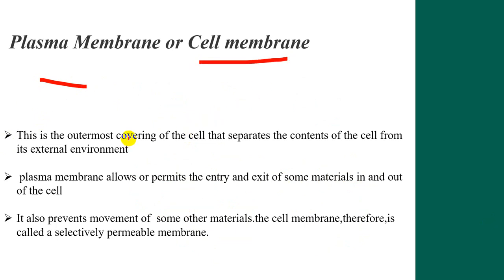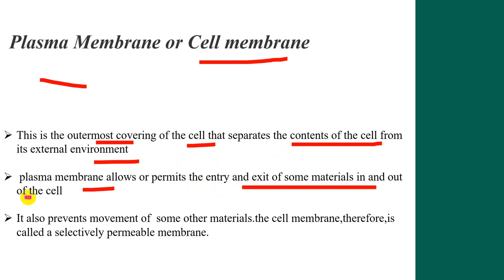Now, what is the function of the plasma membrane? It is the outermost covering of the cell that separates the contents of the cell from its external environment. The plasma membrane allows or permits the entry and exit of some materials in and out of the cell, and also prevents entry of some other materials. This is why the cell membrane is called a selectively permeable membrane — it selects which material will go out and which material will go inside.